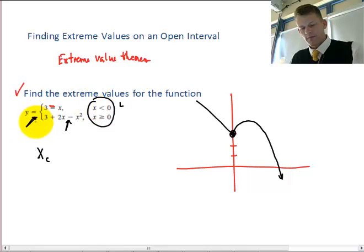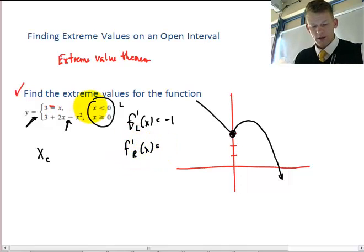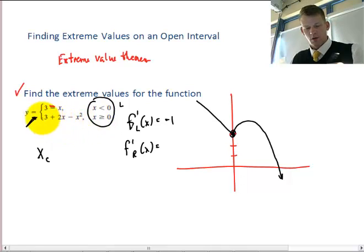In this case, the function's left derivative, I'll write f prime from the left of x is equal to negative 1, and the derivative from the right is equal to, so I would take the derivative of this function, I would get 2 minus 2x.